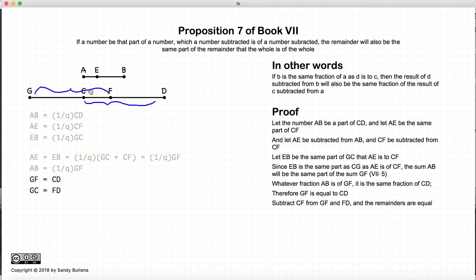So if we subtract cf from both sides of that equality, we end up that gc is equal to fd.